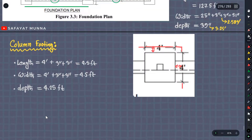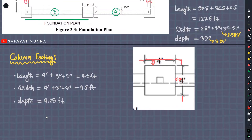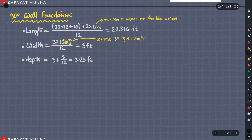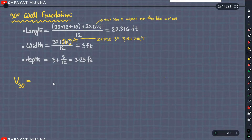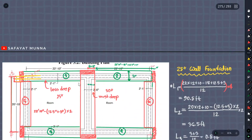So now let's calculate the volume. I will calculate the volume — this is called V30. What is the total? It is defined as: 32 miles — 47.916 × 3 × 3.25. That equals 213.431 CFT. That is the 13-inch wall foundation.